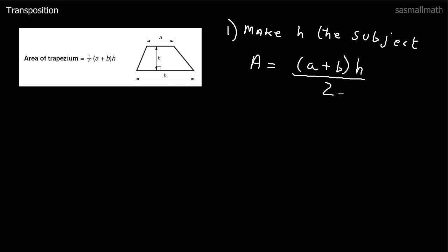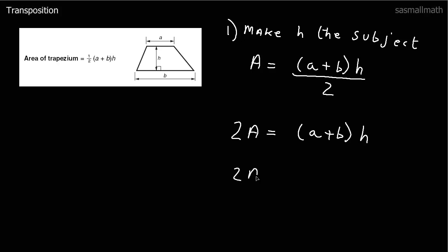First thing we do is get rid of this 2. The 2 is dividing, so we multiply both sides by 2. This bracket is multiplying h, so we can move the whole lot in one go. So 2A over (a plus b) equals h — and we don't need the bracket there anymore. That's that one done.